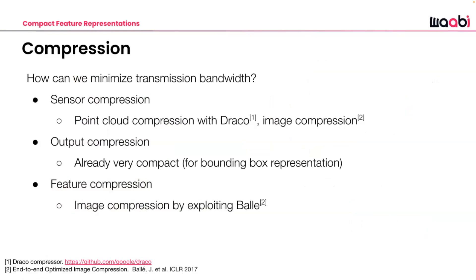Another important aspect is compression — sending messages as compactly as possible. Options include point cloud compression and image compression, but these are often based only on reconstruction metrics and don't account for the end task of autonomy performance. Output representations are already compact. Learning-based compression techniques also exist, such as learned compression for feature-based message sending.